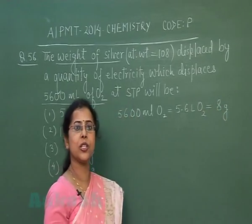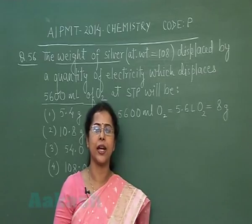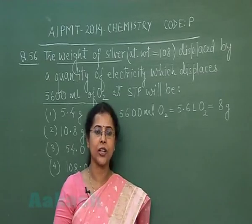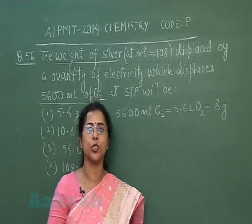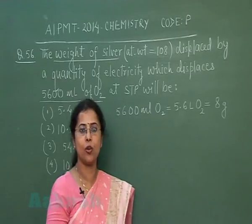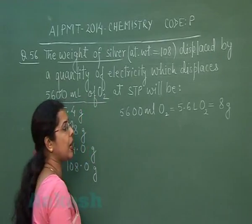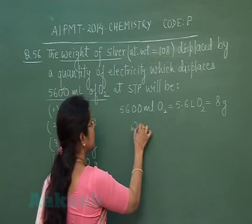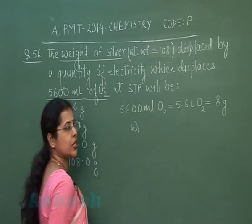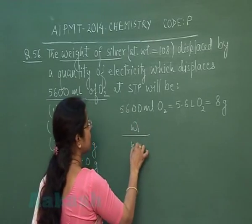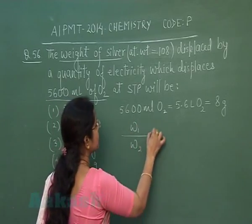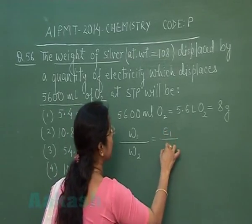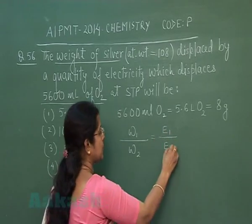Since the same quantity of electricity is used for the deposition of silver, we can apply Faraday's second law of electrolysis, which states that masses of substances deposited are directly proportional to their equivalent masses.